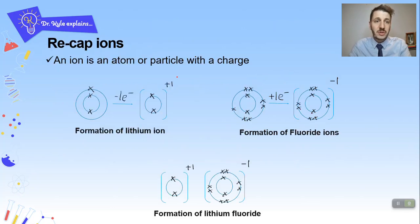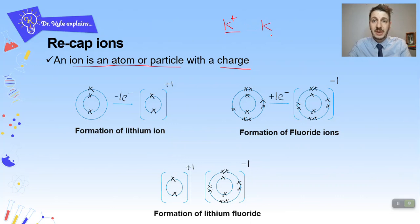An ion is an atom or a particle with a charge. So potassium with a plus sign is an ion; without a charge, it's not an ion. Chlorine without a charge is not an ion, but Cl⁻ is an ion. Whenever you see something with a positive or negative charge, it's an ion. If you're unfamiliar with this, please go through my other videos on electronic structure and how to form ions for more detail.